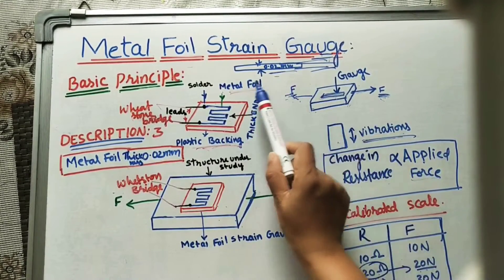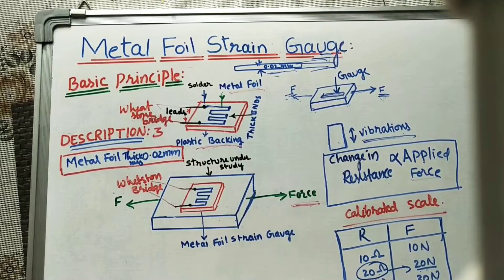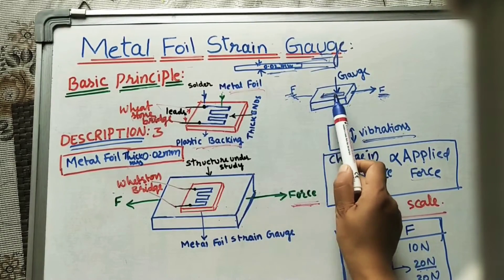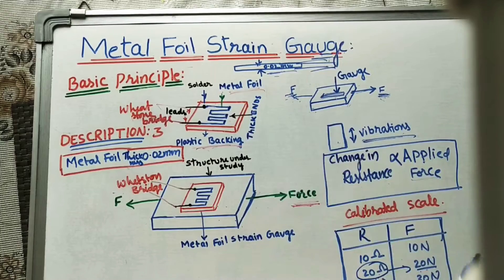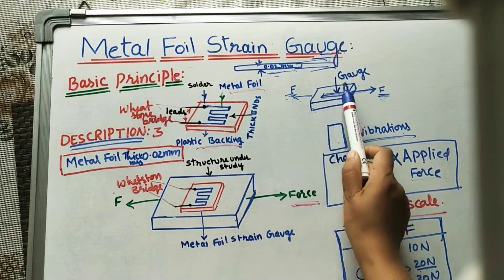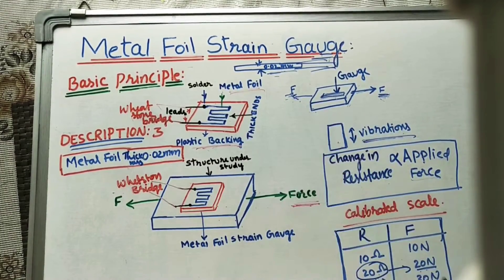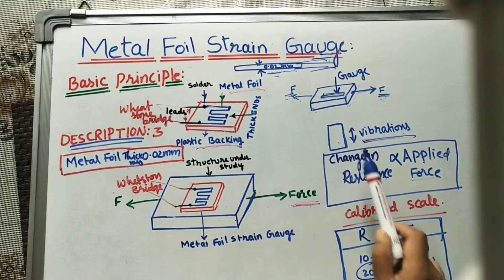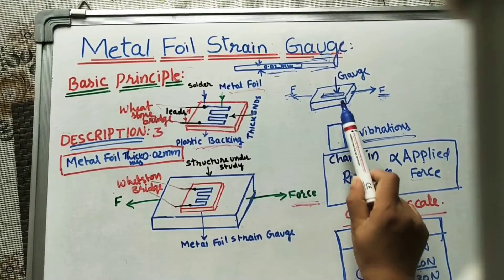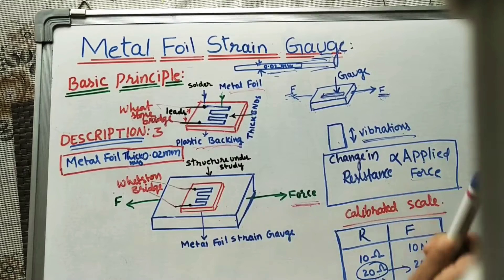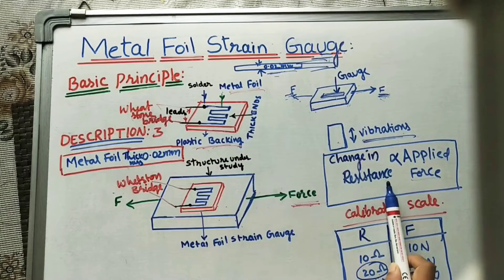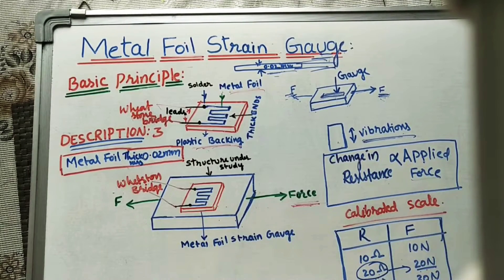Let us take the basic principle of this metal foil strain gauge. We use a metal foil of thickness 0.02 mm, keeping this foil on the structure whose applied forces we have to find. If you apply forces, the structure will elongate and this foil also gets more length. Because of the change in dimension, the resistance of this foil also changes. That change in resistance is proportional to the applied force, and this is the main basic principle of this strain gauge.